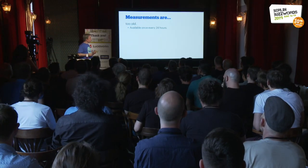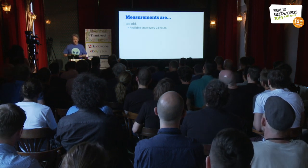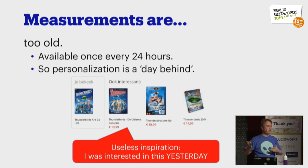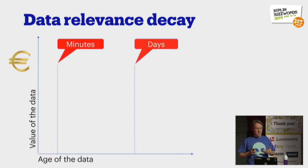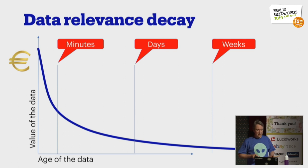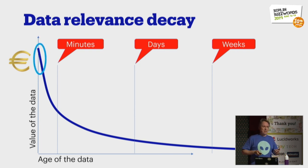An additional problem of JavaScript measurements is that for doing personalization, they're too old. They're loaded every 24 hours. Personalization should be: I look at this product, maybe these are interesting. The key thing is that the data quality and value of the data drops rapidly over time. For situations where you want to personalize the website, you really want to be in the low-seconds area to be up to speed with the visitor on the site.